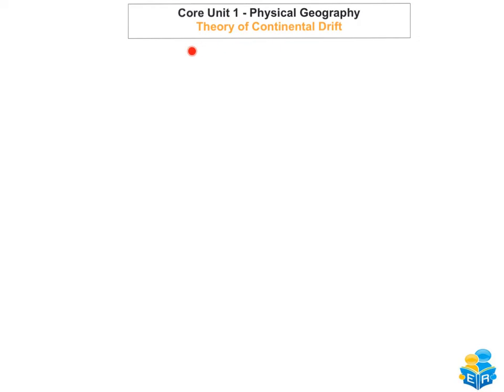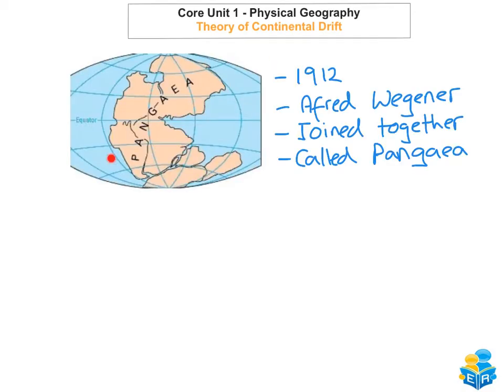The first thing you need to know about the Theory of Continental Drift: it was first proposed in 1912 by a man called Alfred Wegener. He proposed that all continents were joined together in one big giant landmass called Pangea.